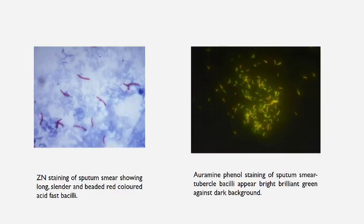This is how the sputum smear appears. On the left you can see the Ziehl-Neelsen stain — long, slender, beaded red-colored acid-fast bacilli colonies. On the right you can see the auramine phenol staining, where the tubercle bacilli appear bright, brilliant green against a dark background. Certain other fluorescent staining techniques such as auramine phenol are used for sputum smears nowadays.